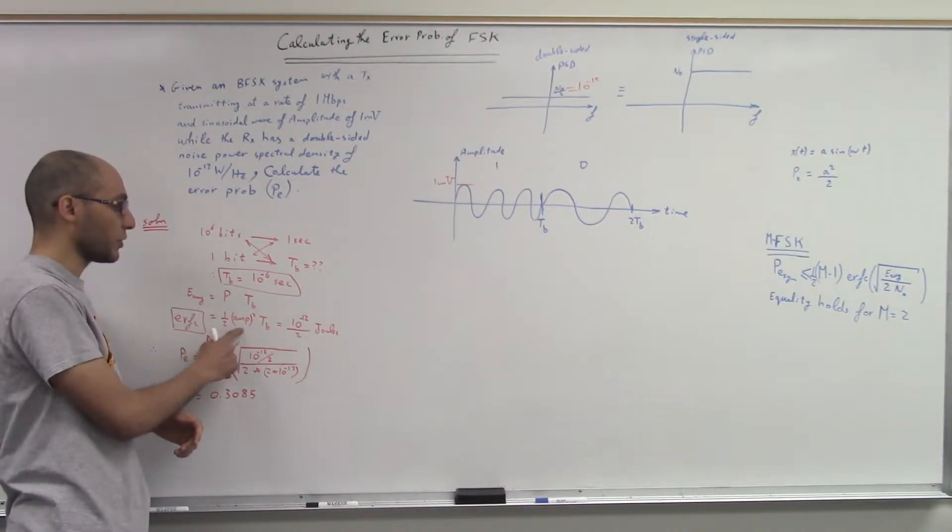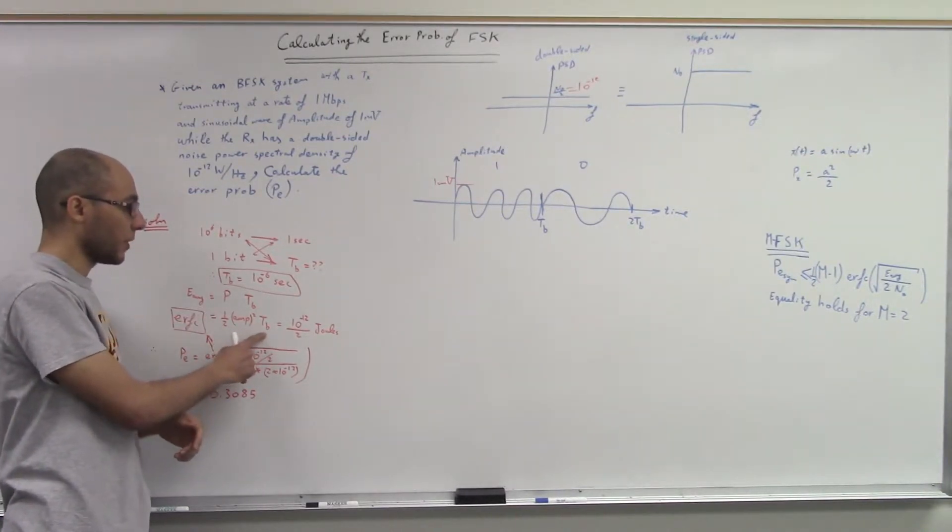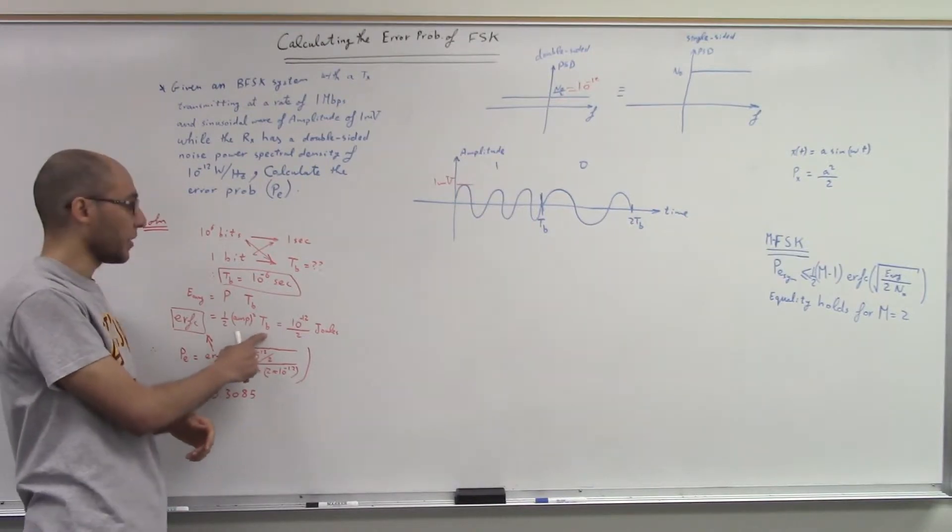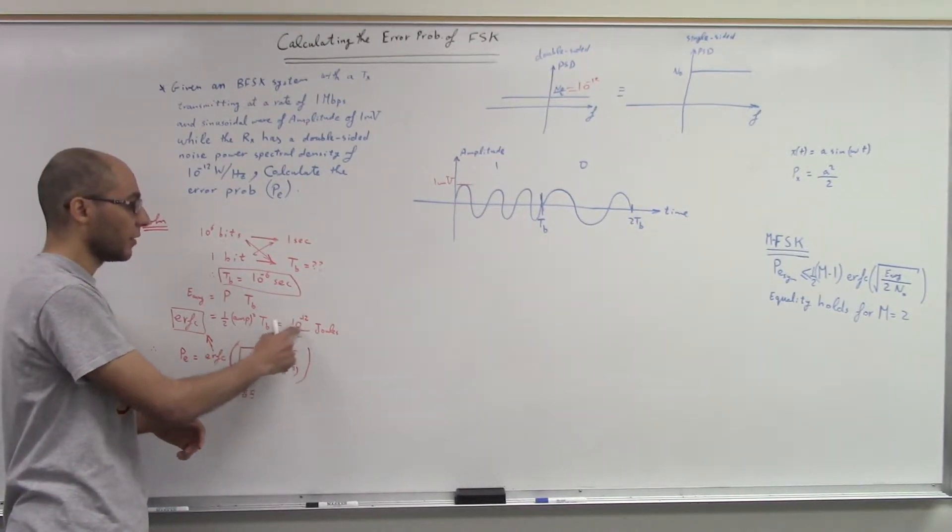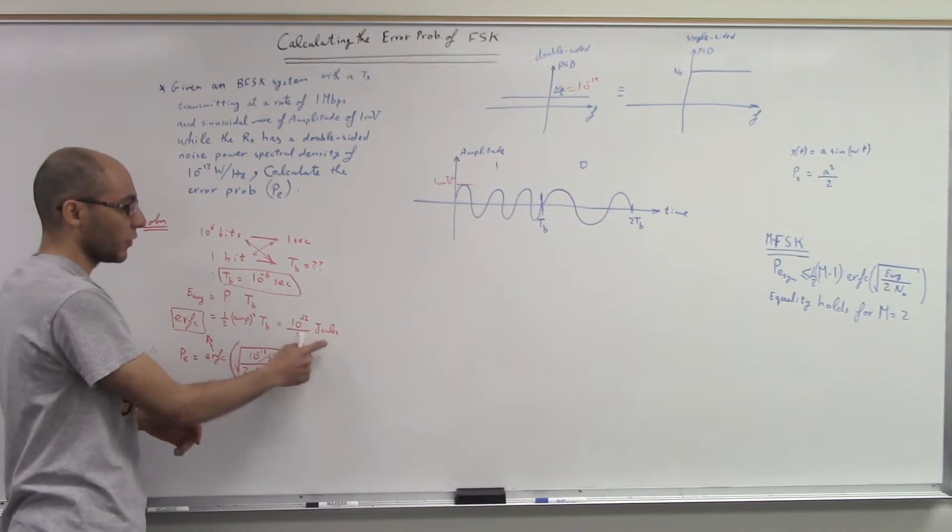Multiplied by 10 power negative 12, multiplied by 10 power negative 6, you get half of 10 power negative 12 joules. Of course, this is in joules.